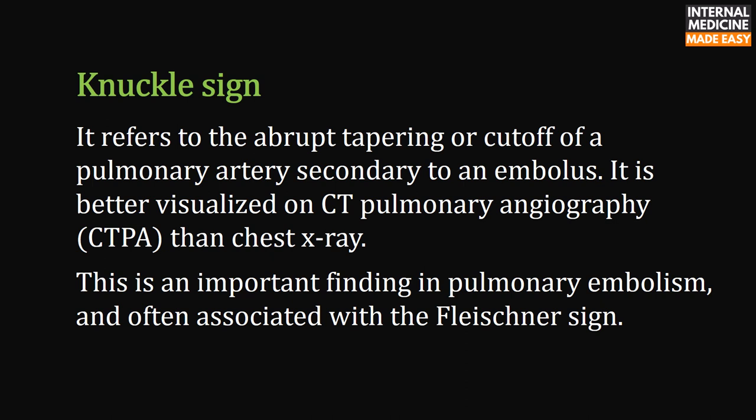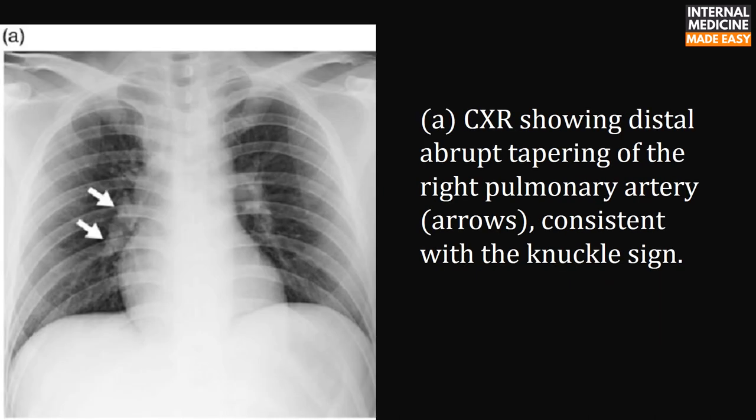The Knuckle sign refers to the abrupt tapering or cutoff of a pulmonary artery secondary to an embolus. It is better visualized on CT pulmonary angiography than chest X-ray, and is an important finding in pulmonary embolism, often associated with the Fleischner sign. This chest X-ray shows distal abrupt tapering of the right pulmonary artery, indicated by arrows, consistent with the Knuckle sign.